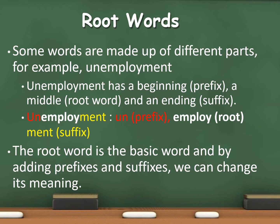Some words are made up of different parts. For example, 'unemployment.' Unemployment has a beginning, that is the prefix; a middle word, that is the root word; and an ending, that is the suffix. In 'unemployment,' 'un' is the prefix, 'employ' is the root word, and 'ment' is the suffix.